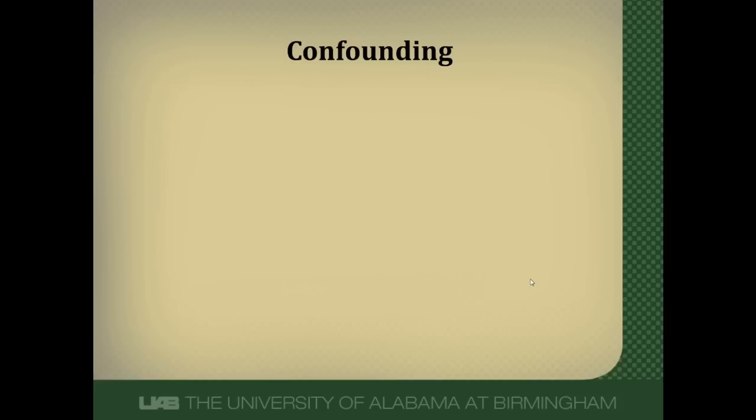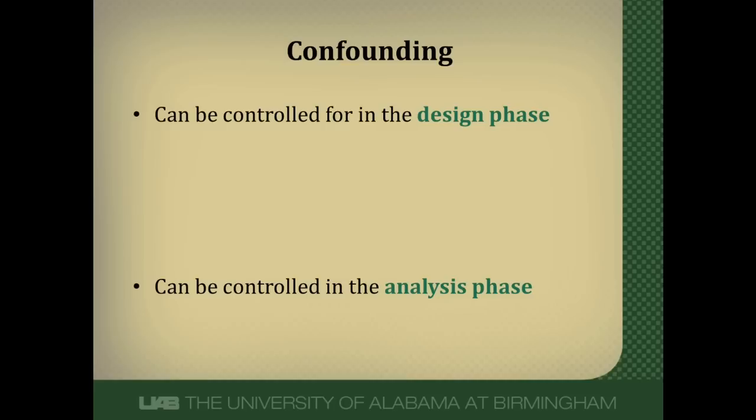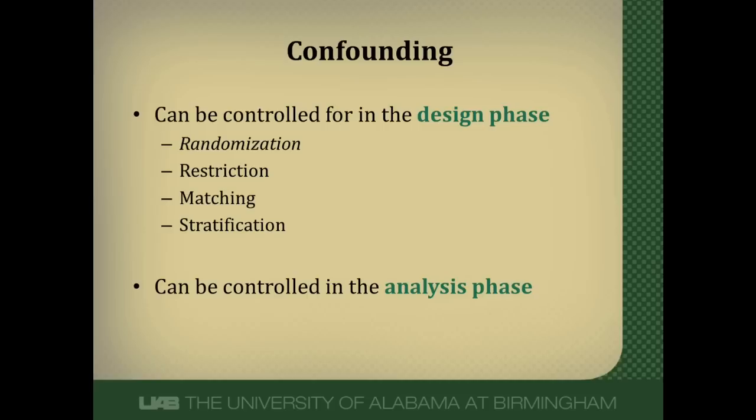Confounding can be controlled for in two different components of a study: the design phase or the analysis phase. In the design phase, we could use randomization, restriction, matching, or stratification. Randomization is the most powerful way to control for confounders — it's why we prefer randomized controlled trials for therapy over observational studies. Randomization controls even confounders we don't measure, as unknown potential confounders will be equally distributed between the two groups.